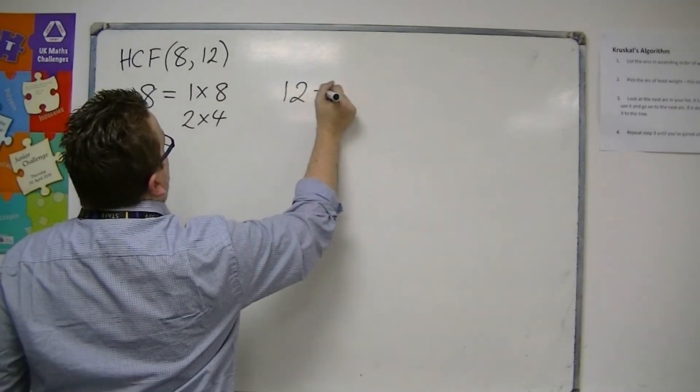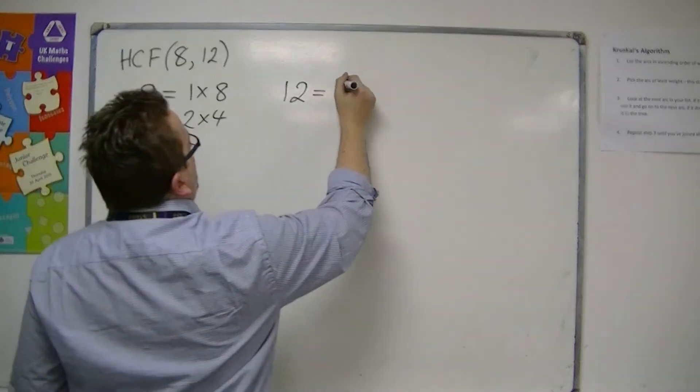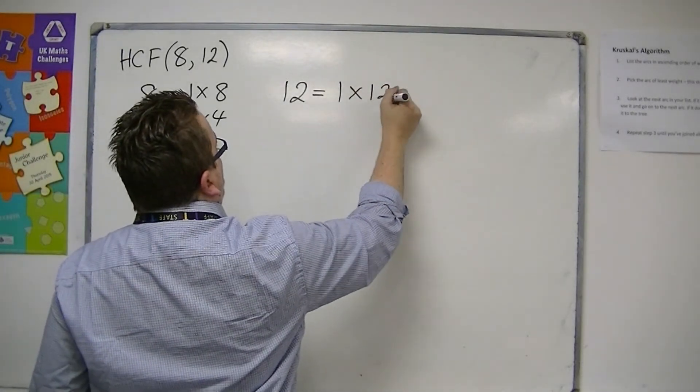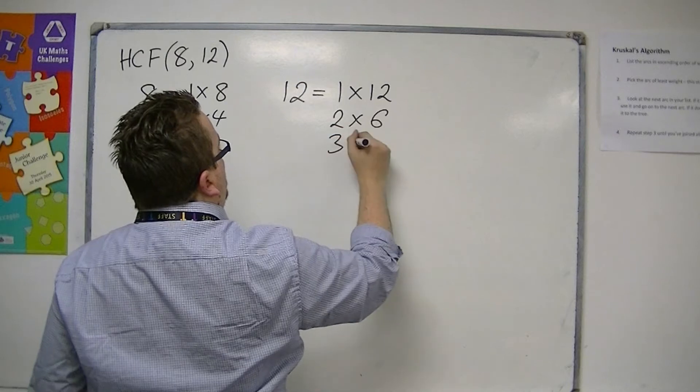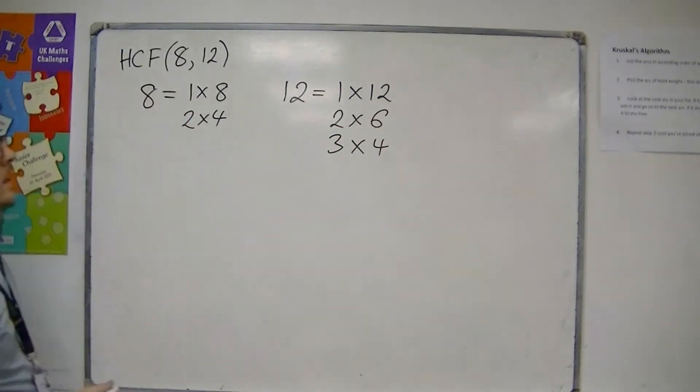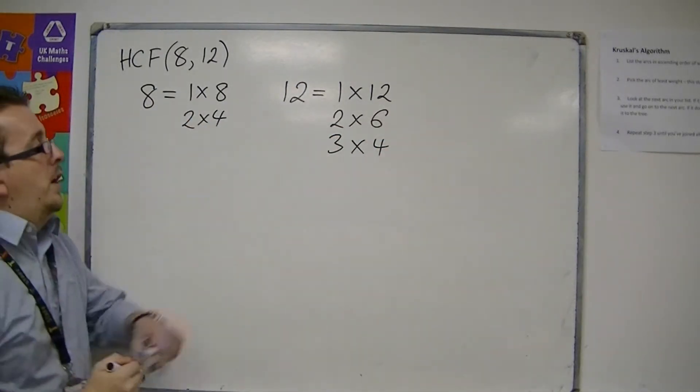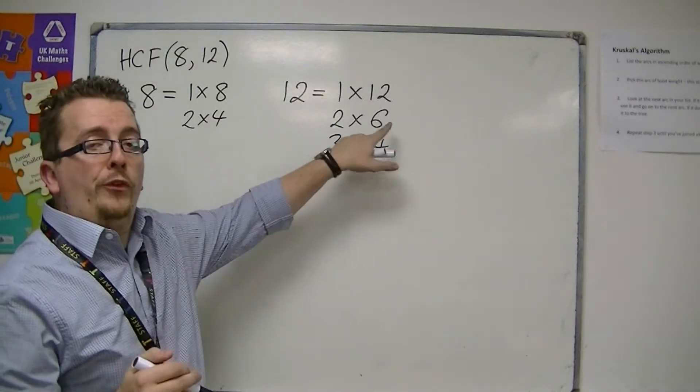Then we look at the factors of 12. We can get 12 by doing 1 times 12, 2 times 6, and 3 times 4. So the factors of 12 are 1, 2, 3, 4, 6, and 12.